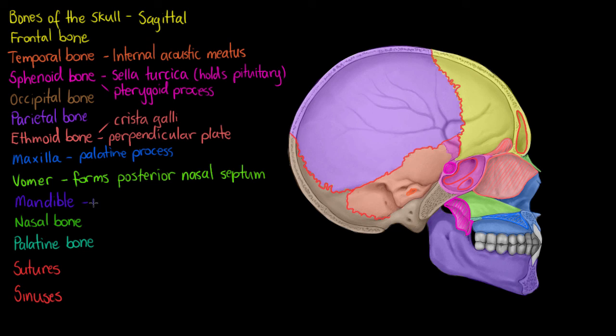And the last structure we're going to look at here is the mandibular foramen. Mandibular foramen I'll just outline here. So right here. And it's going to be the point on our mandible where our mandibular nerve and blood vessels will pass through.